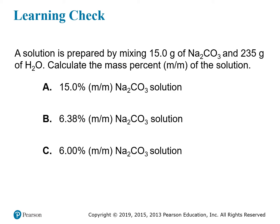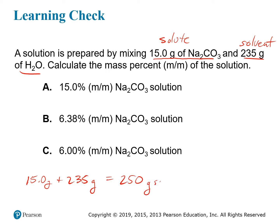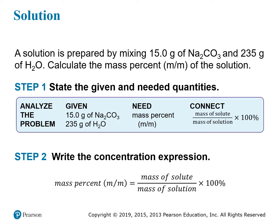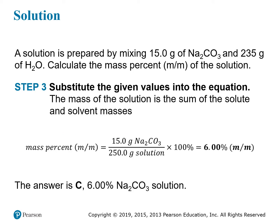Another example: a solution is prepared by mixing 15 grams of sodium carbonate and 235 grams of water (H₂O). Calculate the mass percentage. The sodium carbonate is the solute and water is the solvent, giving a total solution mass of 15 + 235 = 250 grams. The mass percent is 15 grams divided by 250 grams times 100, giving answer C — 6%.